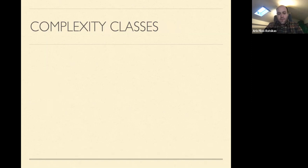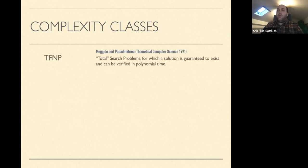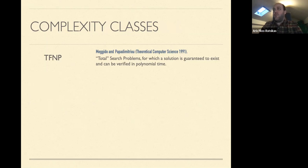To talk about complexity, we need to discuss the appropriate complexity classes. For problems where a solution always exists, Megiddo and Papadimitriou in 1991 defined the class TFNP — total search problems in NP — 'total' meaning a solution always exists, and given a solution we can verify it efficiently in polynomial time. All three problems I mentioned are in TFNP.